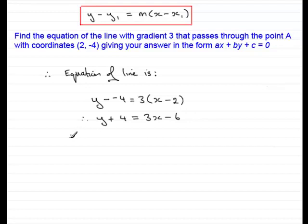So, now I'm going to subtract y from both sides and also subtract 4 from both sides and that's going to leave me with 3x - y and -6 - 4 is -10 and that's going to equal 0.